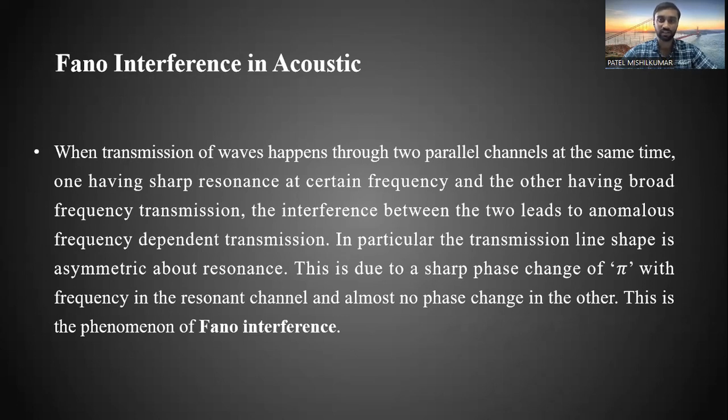To understand it in easier words: when transmission of waves happens through two parallel channels at the same time—one having sharp resonance at certain frequency and the other having broad frequency transmission—the interference between the two leads to anomalous frequency dependent transmission. In particular, the transmission line shape is asymmetric about resonance. This is due to a sharp phase change of π with frequency in the resonant channel and almost no phase change in the other. This is the phenomenon of Fano interference.